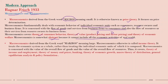Macroeconomics is derived from the Greek word 'macros' meaning large, and is otherwise called income theory. It treats the economic system as a whole rather than individual units. Macroeconomics deals with the overall flow of goods and resources in an economy. It covers the theory of income and employment, theory of money and prices, banking, theory of economic growth, macro theory of distribution, general equilibrium analysis, and policy formation.